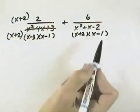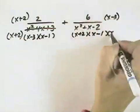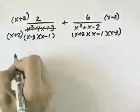This fraction is missing the factor of x minus 3, so we'll multiply the numerator and the denominator by x minus 3. And now we can see we have the three common factors in our denominator.